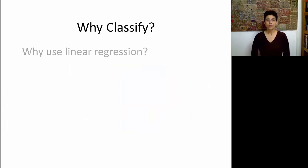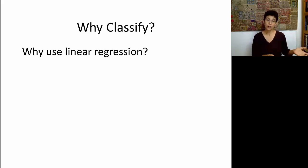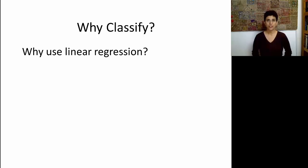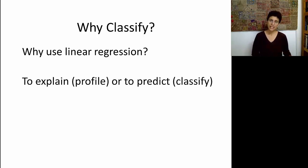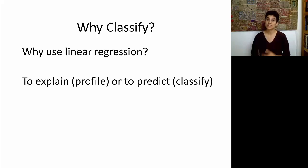So why do we even want to classify? Think about it this way: why do we use linear regression? We talked about two different but useful goals — descriptive or explanatory goals, and predictive goals. In the explanatory scenario, we're trying to retrospectively understand a relationship between an output and a set of inputs. In the predictive mode, we're trying to predict new records. This same idea underlies classification, except we use slightly different terms. Explaining in the classification world is called profiling, and the term prediction is translated into classification — when people say we're classifying, they mean predicting the class of new records.